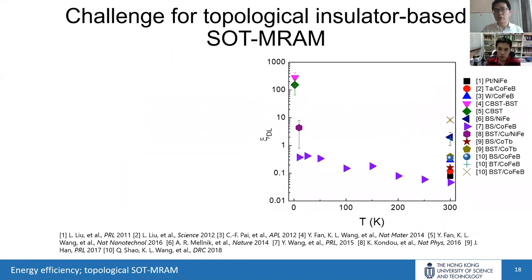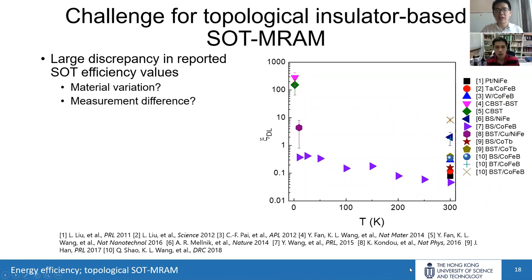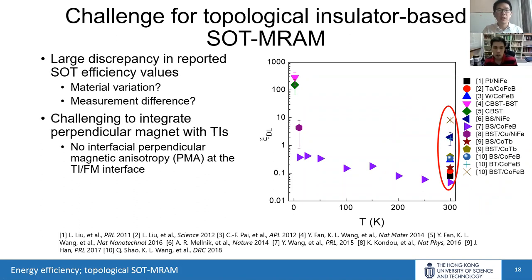People have observed large SOT routinely in topological insulators using spin-torque ferromagnetic resonance, global shift methods, and second-harmonic Hall methods. Insulating topological materials show much larger SOT efficiency than metallic ones due to greater surface state contribution. To achieve real SOT MRAM based on topological insulators, we face two challenges: large discrepancy between reports at room temperature — possibly due to material variation or measurement differences — and difficulty integrating perpendicular magnetic anisotropy with topological insulators due to absence of interfacial PMA at the TI-FM interface.